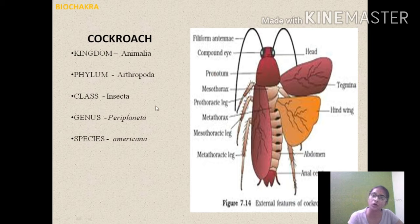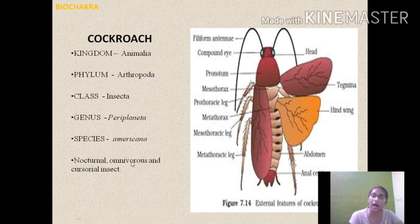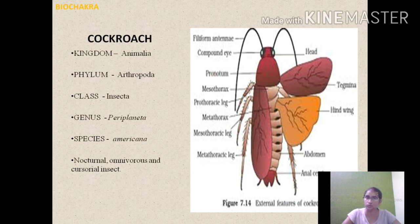Now some general points about the cockroach. The first general point is that it is a nocturnal insect — nocturnal means active during night time. It is omnivorous, meaning it feeds on both plant and animal materials. It is a cursorial insect — cursorial means it uses its legs for running activity.